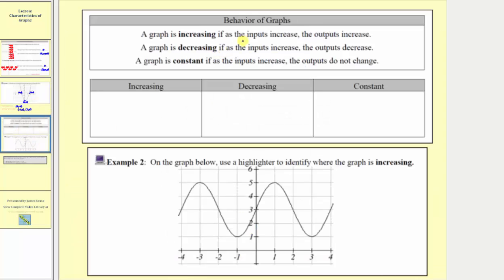Now let's talk about the behavior of graphs described as increasing, decreasing, or constant. A graph is increasing if as the inputs increase, the outputs increase — which also means if we read the graph from left to right and it's going uphill, the graph is increasing. Notice how this line is increasing, because from left to right it goes up, meaning as the inputs increase, the outputs increase.